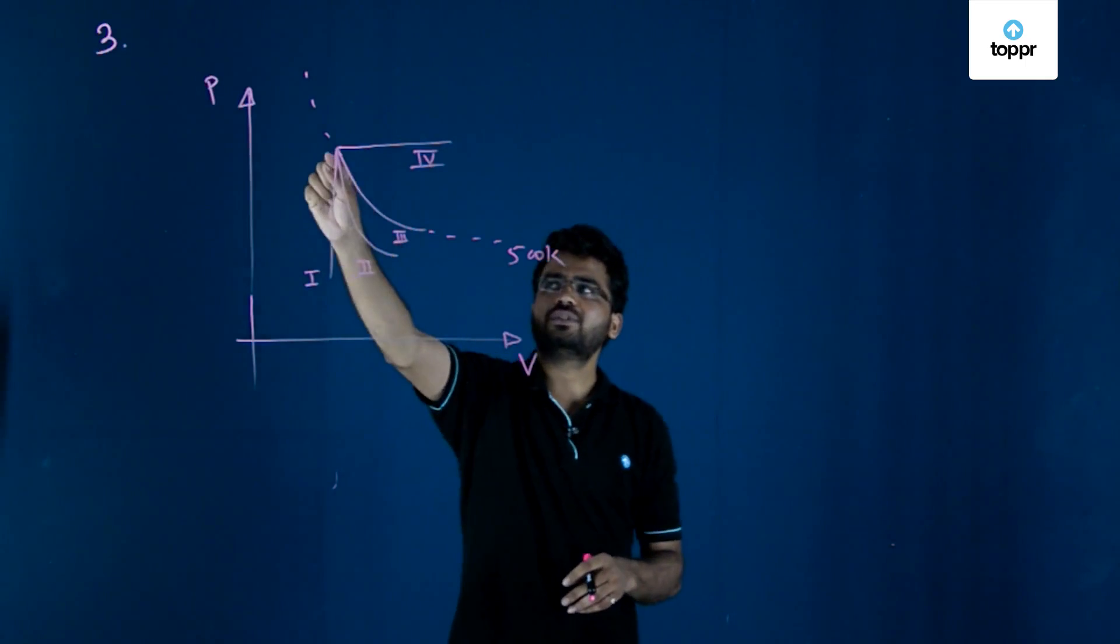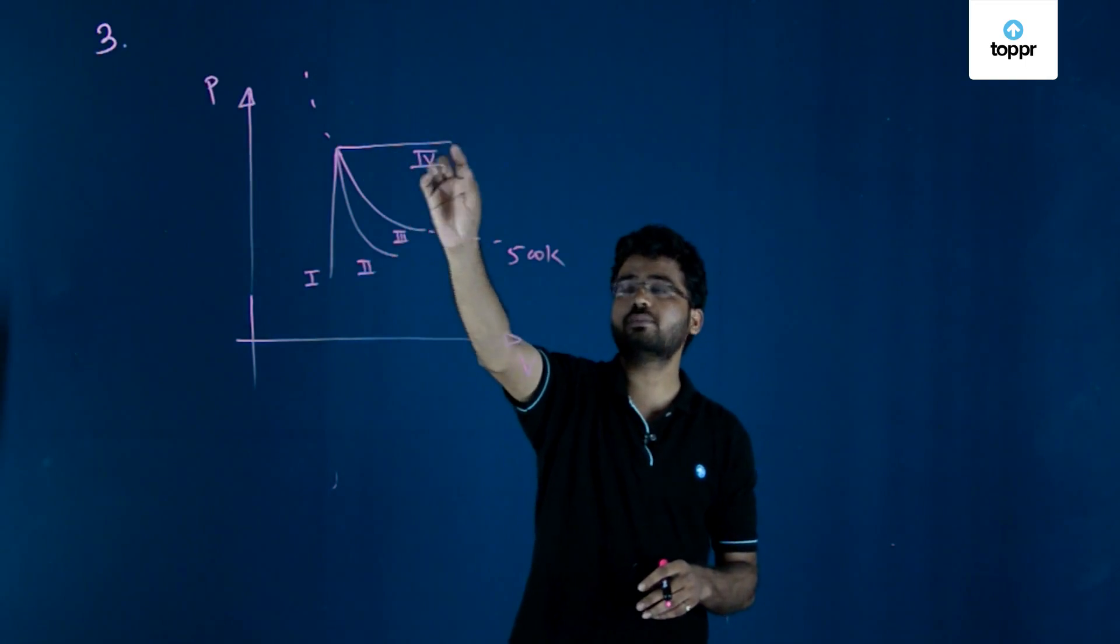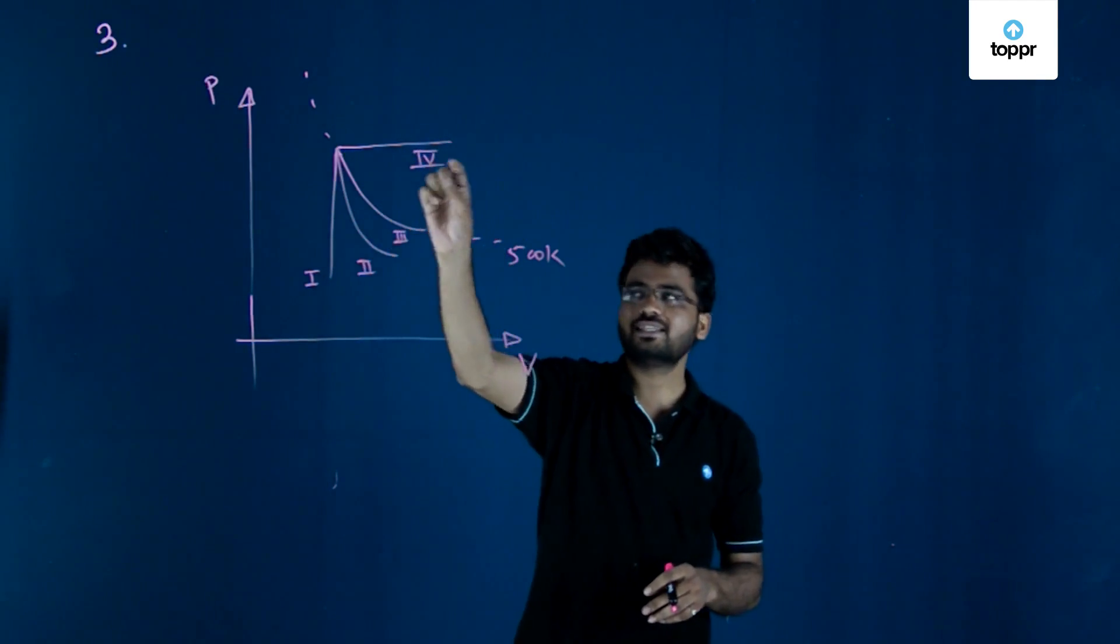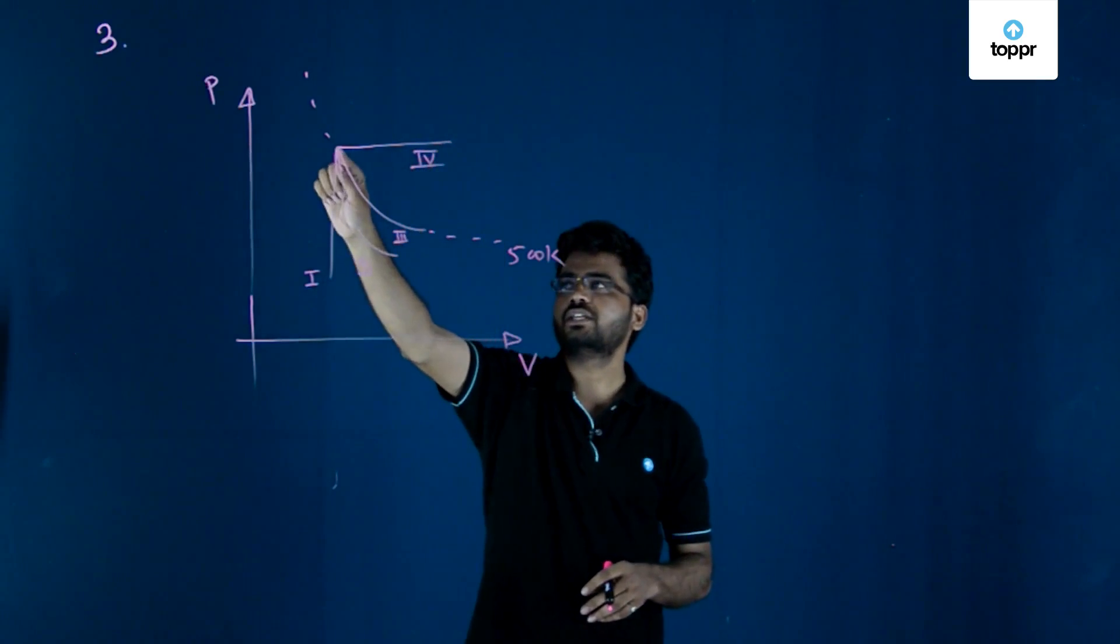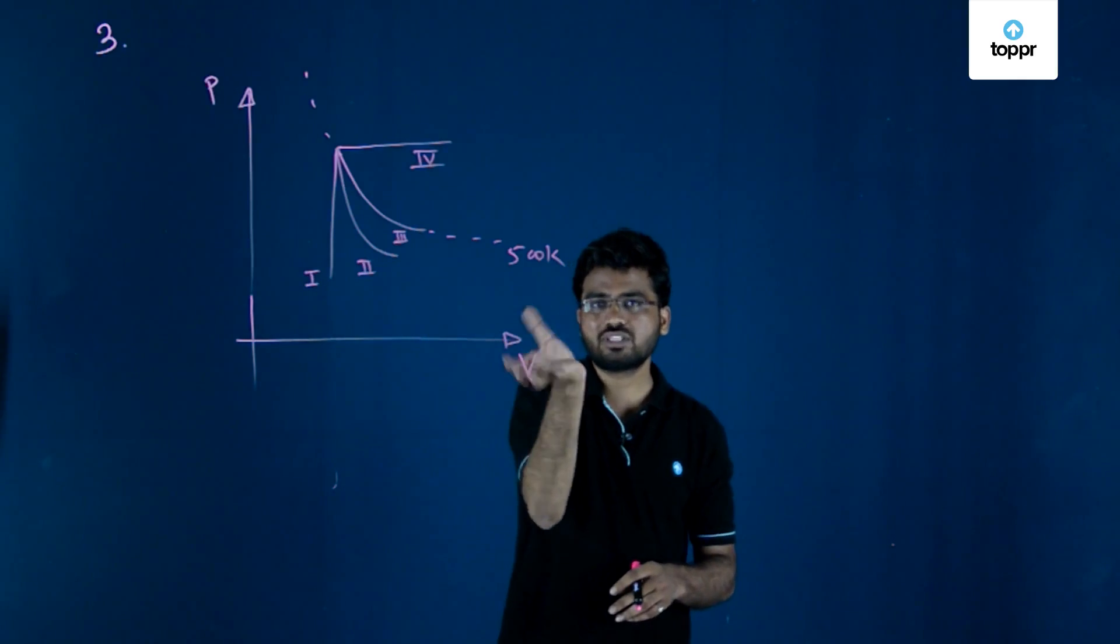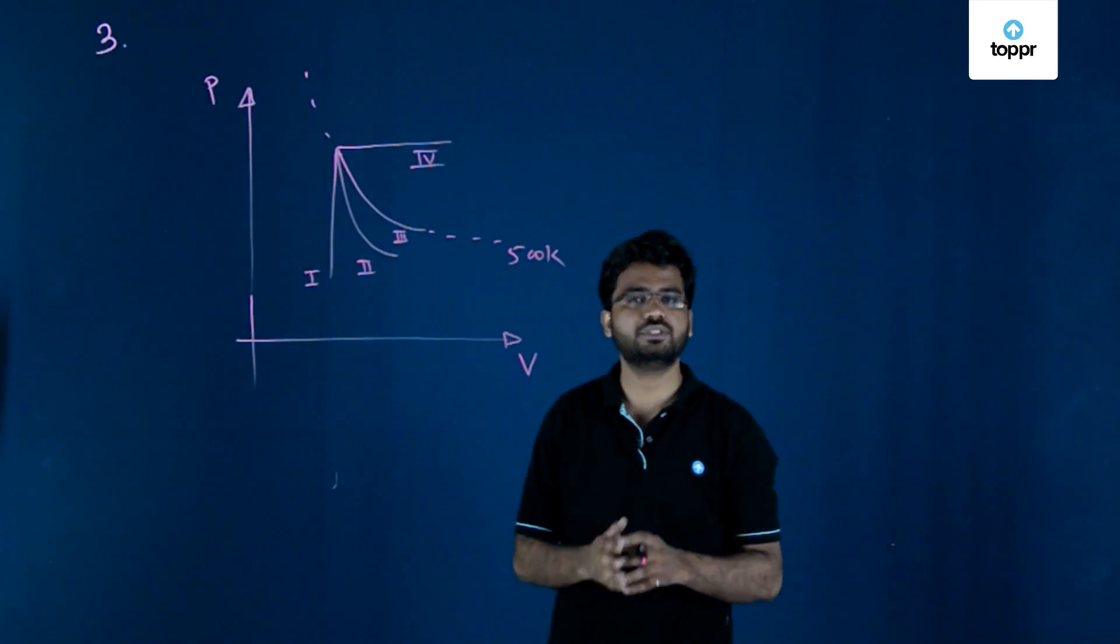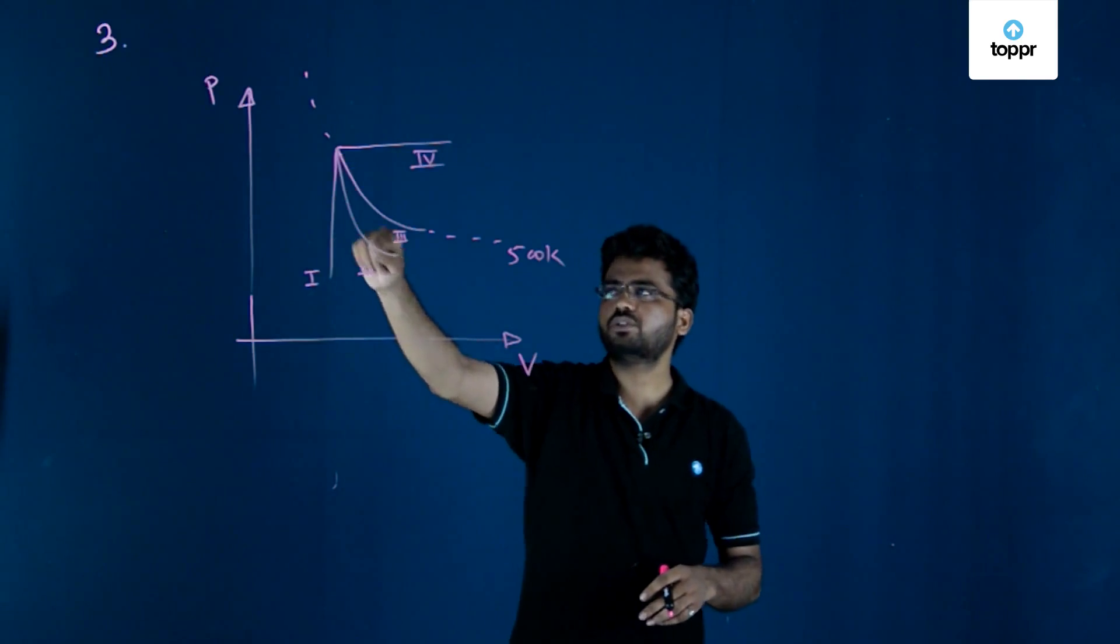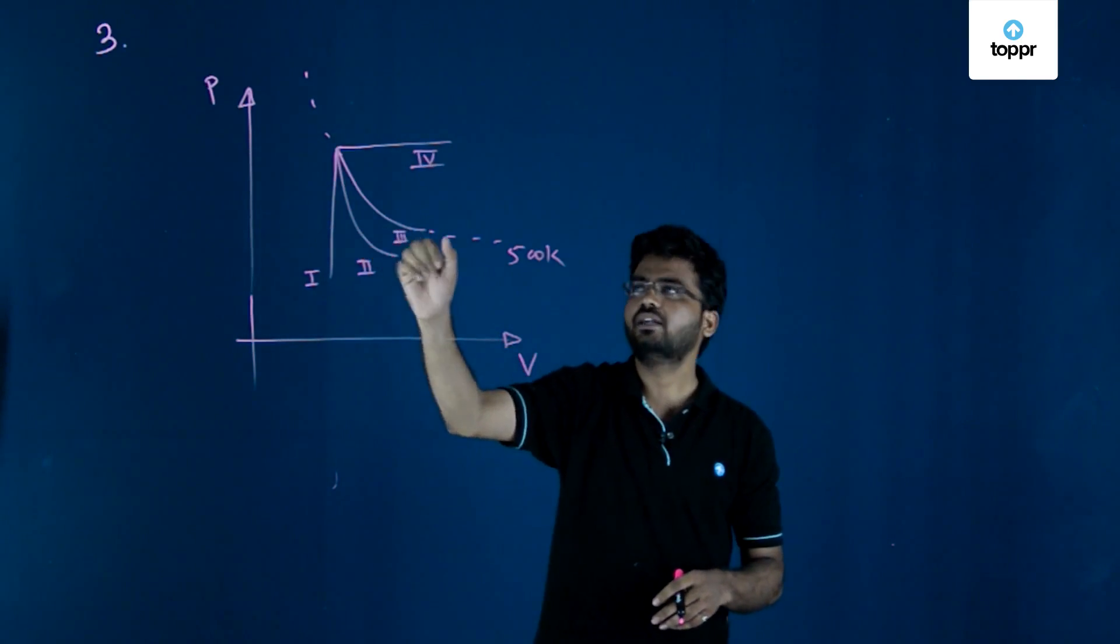As you can see, the fourth process is carried out with constant pressure, the first process is carried out with constant volume, the third process is carried out with constant temperature, and the second process has constant heat.